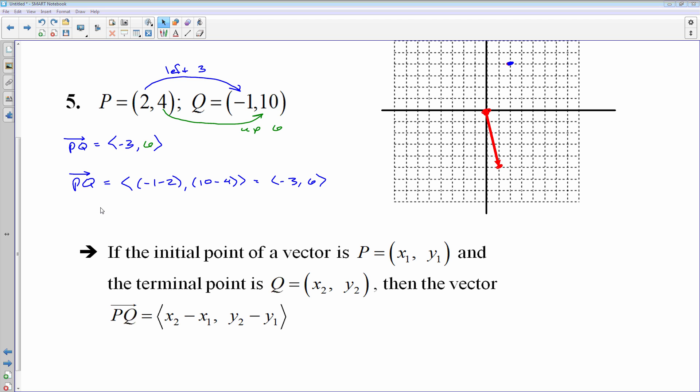There we go. So I just tacked that onto the bottom here. But if the terminal points are x1 y1 and x2 y2, then you just do terminal point minus initial: x2 minus x1 comma y2 minus y1. And that would give you the component form of your vector.